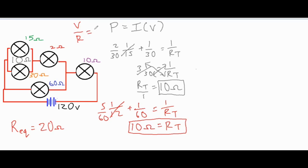Using Ohm's law — I = V/R — our total voltage is 120V and total resistance is 20Ω, so 120 ÷ 20 = 6 amps total current. The purple 10Ω resistor carries all 6 amps. Rearranging Ohm's law to V = IR, we get 6 × 10 = 60V, so the voltage drop across that resistor is 60 volts.